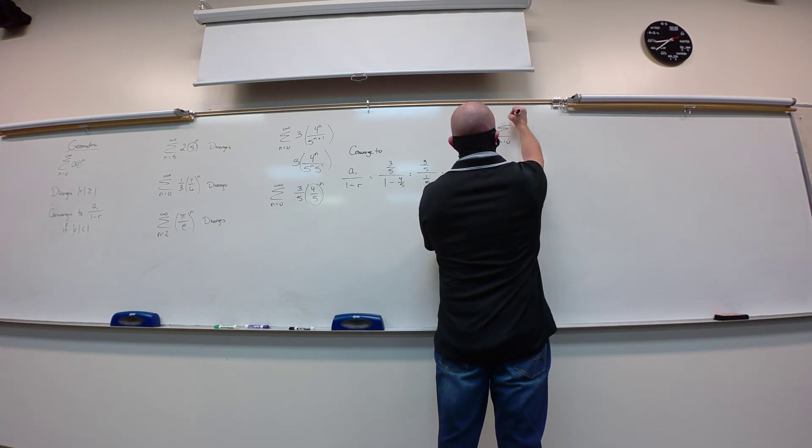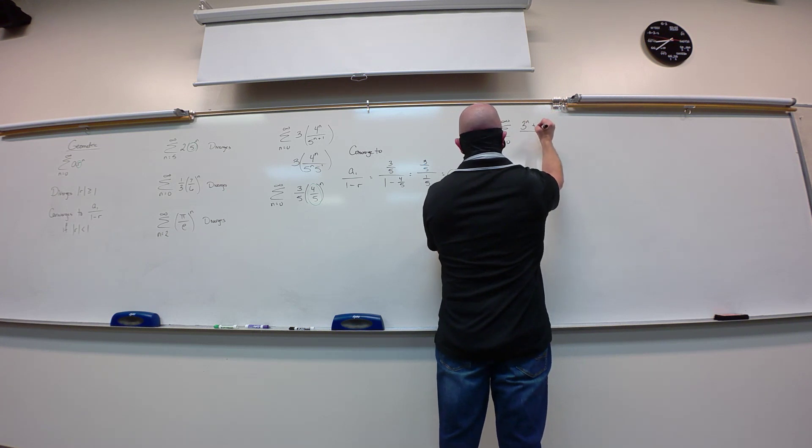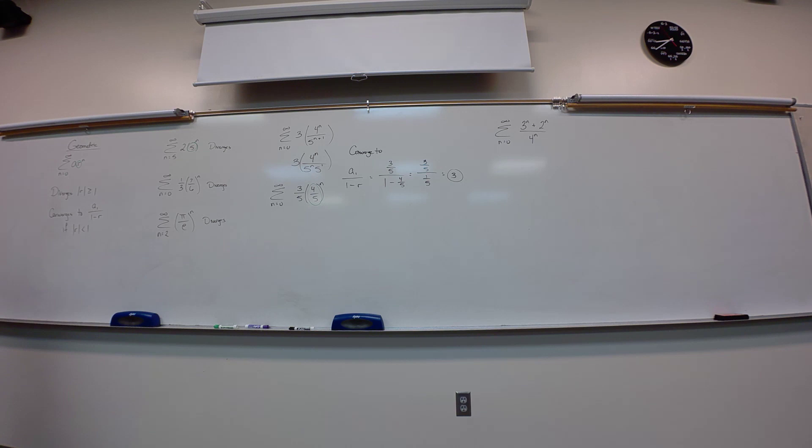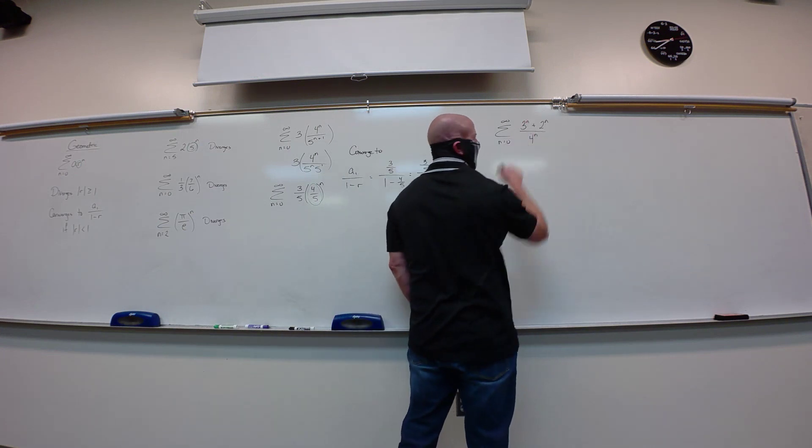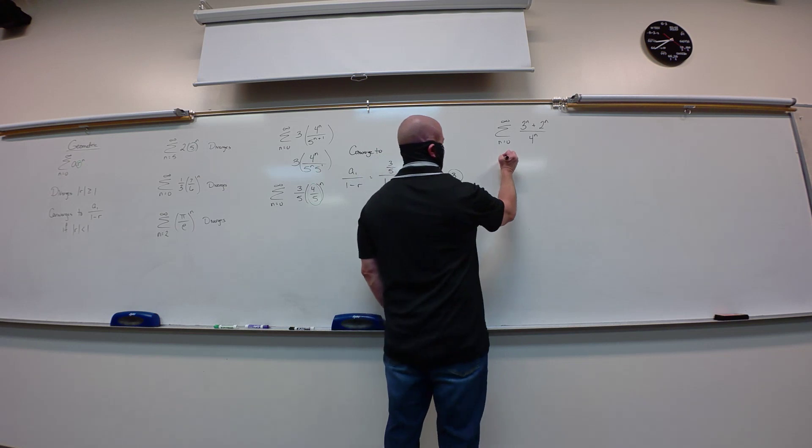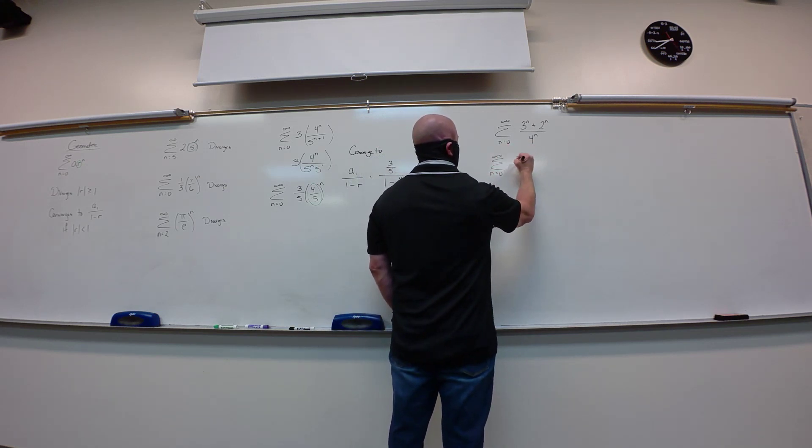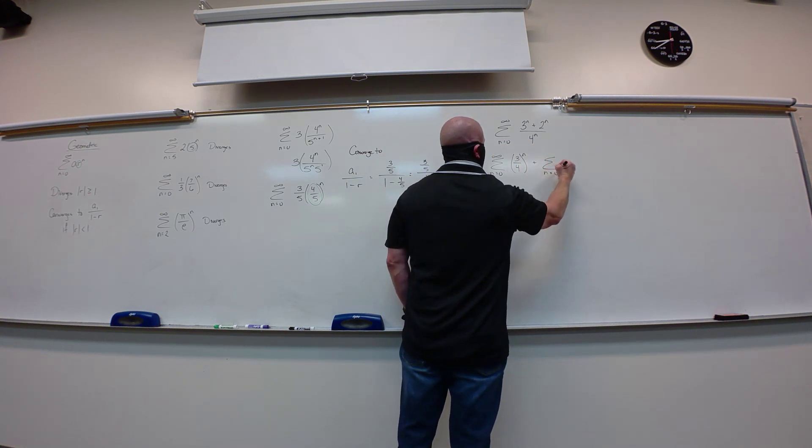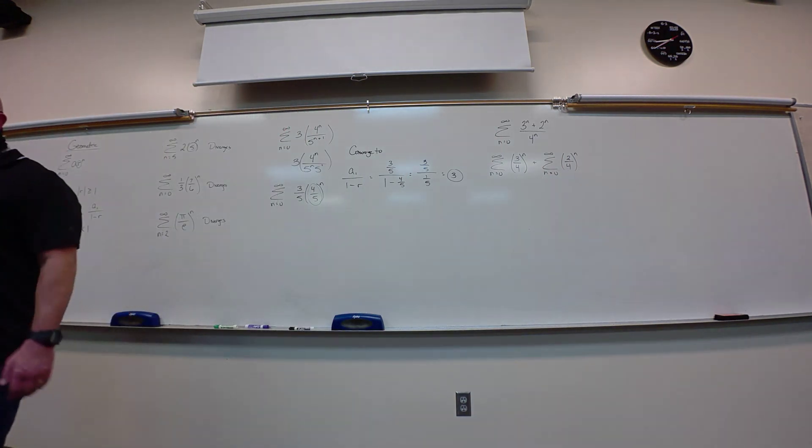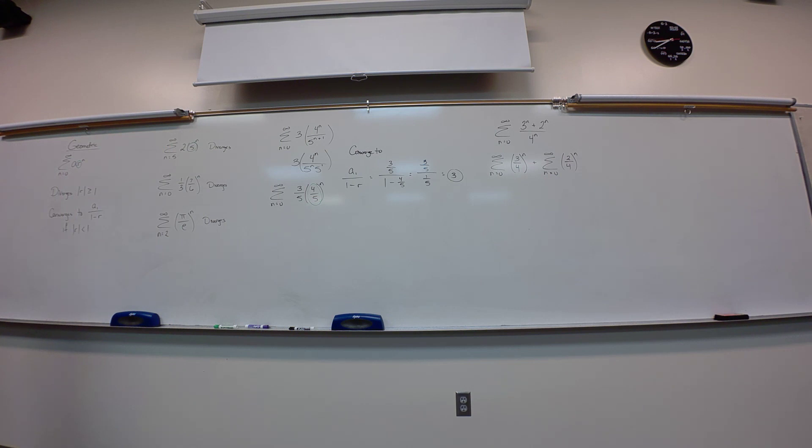So this will be three, four to the n, over five to the n times five. Or you can write five to the first. So now when I rewrite this sum, zero to infinity, we're going to have three-fifths times four-fifths to the n. Since the four and the five are both to the n, I can pull that out side of the fraction. This five comes out. It's still on the bottom, so I get that three-fifths.